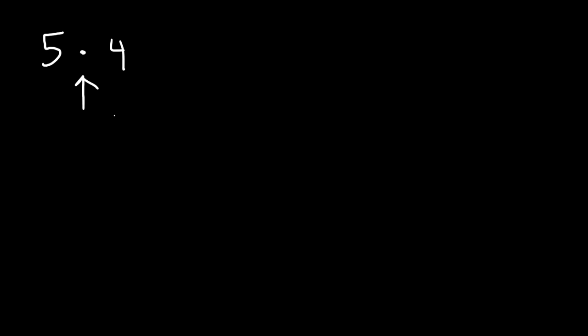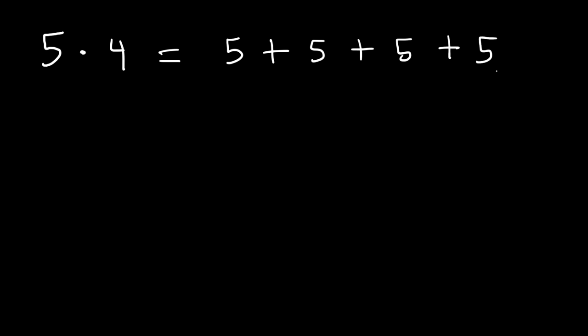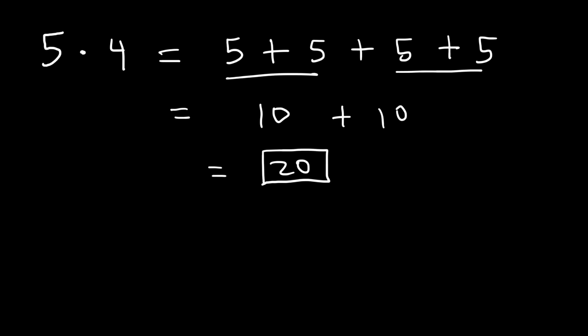In this video we're going to focus on multiplying integers. Let's start with the basics — what is 5 times 4? Whenever you see a dot between two numbers it indicates multiplication. Multiplication is basically repeated addition: 5 times 4 means you're adding 5 four times. 5 plus 5 is 10, and the next two fives add to 10 as well. 10 plus 10 is 20, so 5 times 4 is 20.